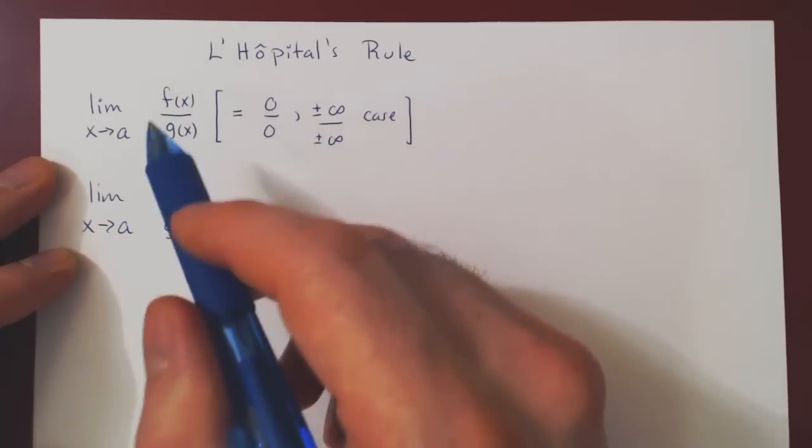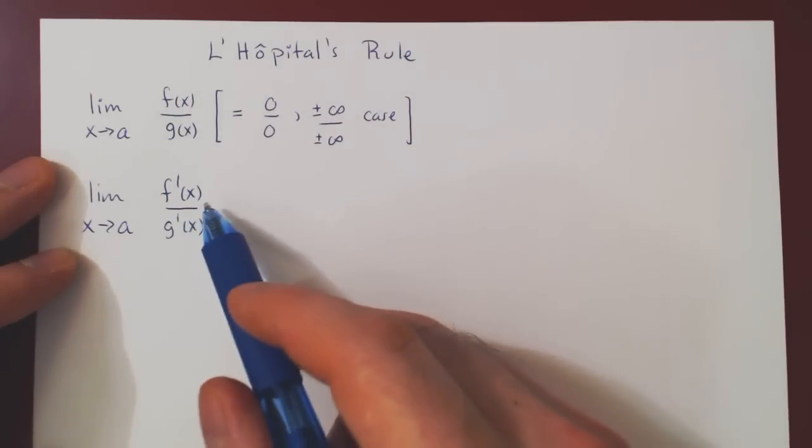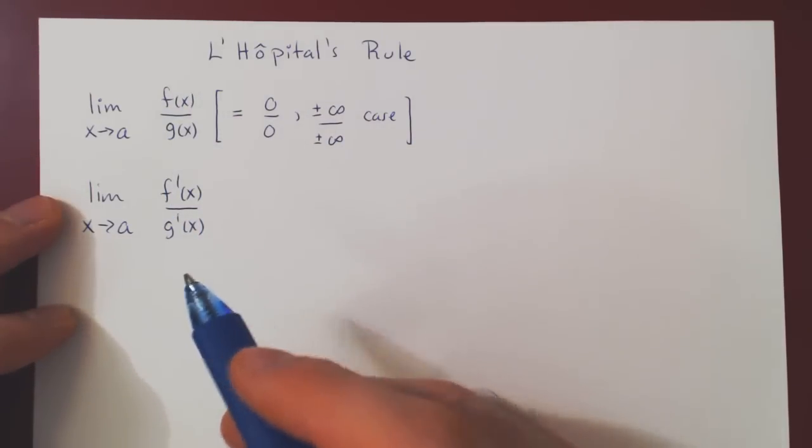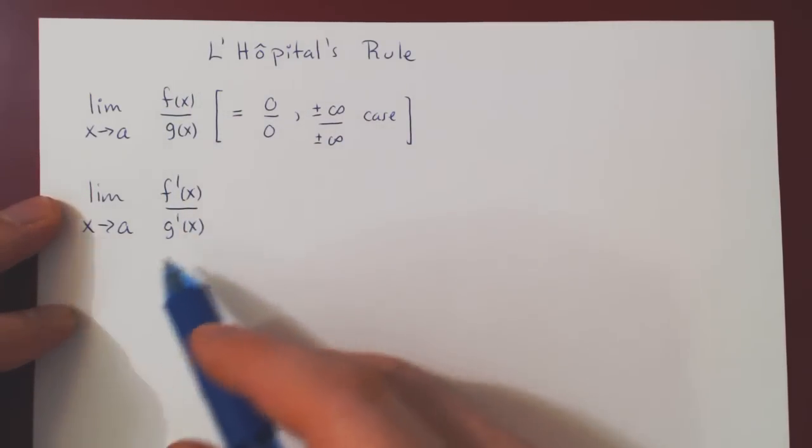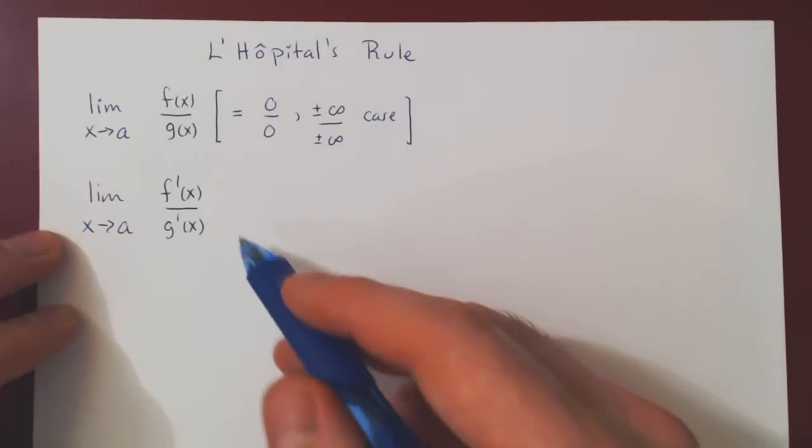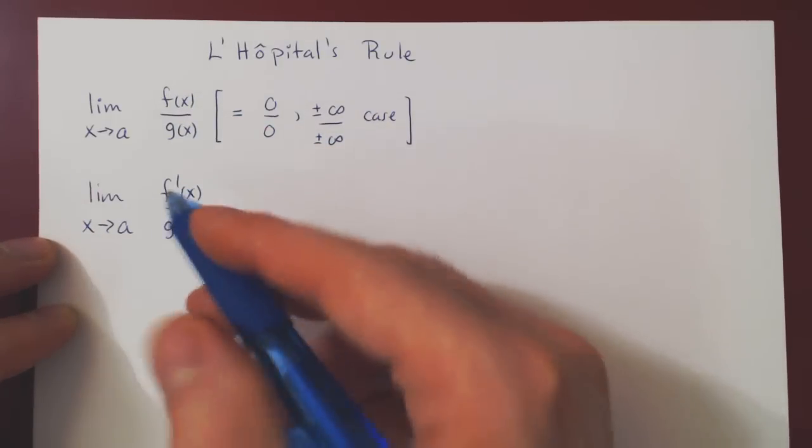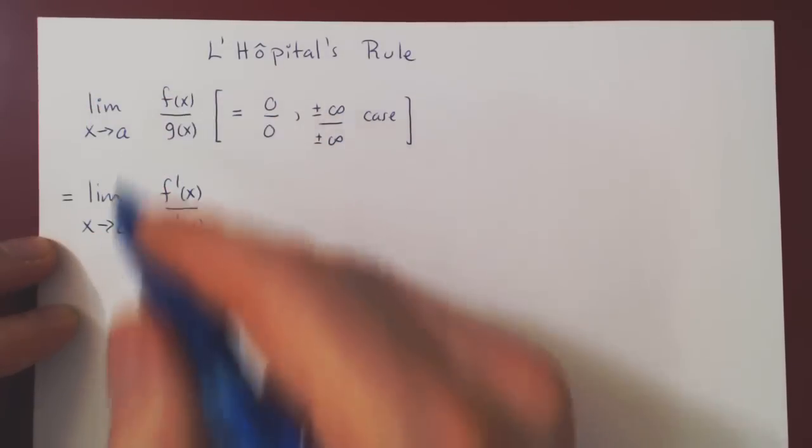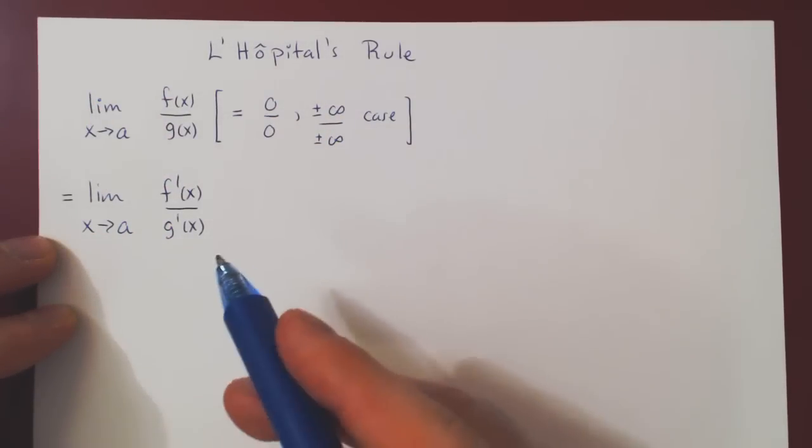And if this limit exists, what L'Hopital's rule says is that this new limit is equal to the original limit. And that's it.